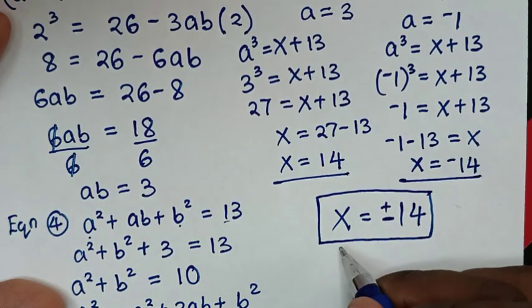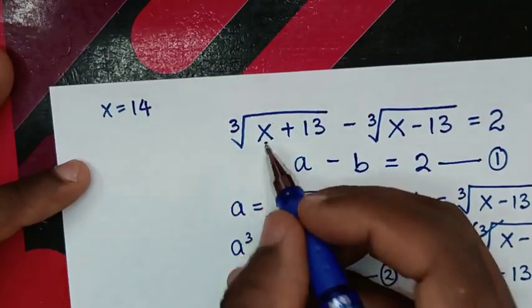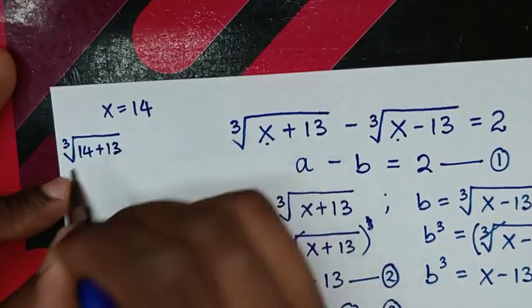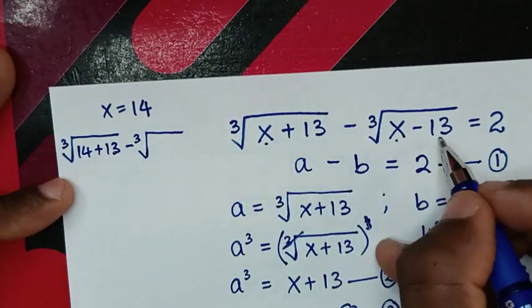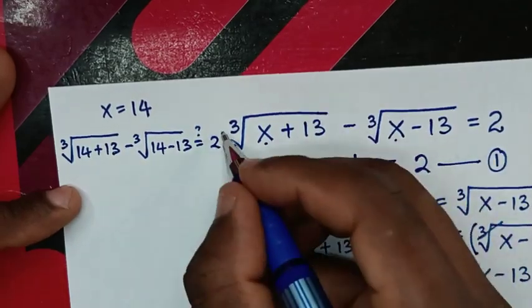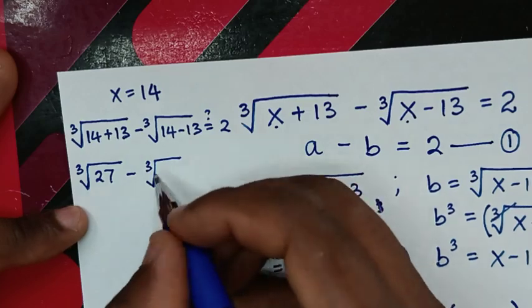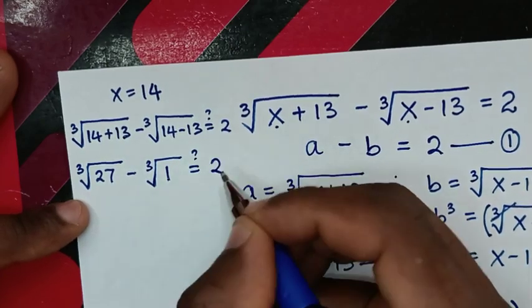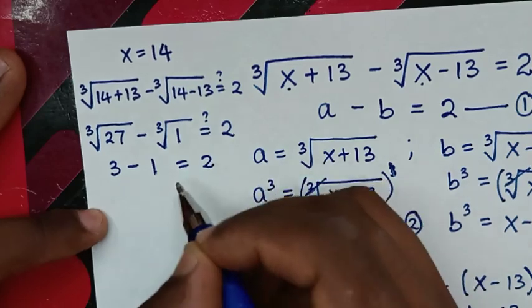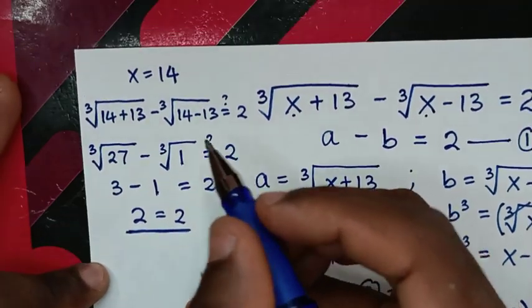To check if x = 14 is correct, we substitute back: cube root of (14 + 13) minus cube root of (14 - 13) = cube root of 27 minus cube root of 1 = 3 - 1 = 2. Left side equals right side, so it is true for x = 14.